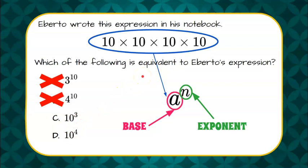Now we need to know how many times to multiply 10 by itself. We have 1, 2, 3, 4, meaning our exponent has to be 4 and our base has to be 10, giving us an answer of D.